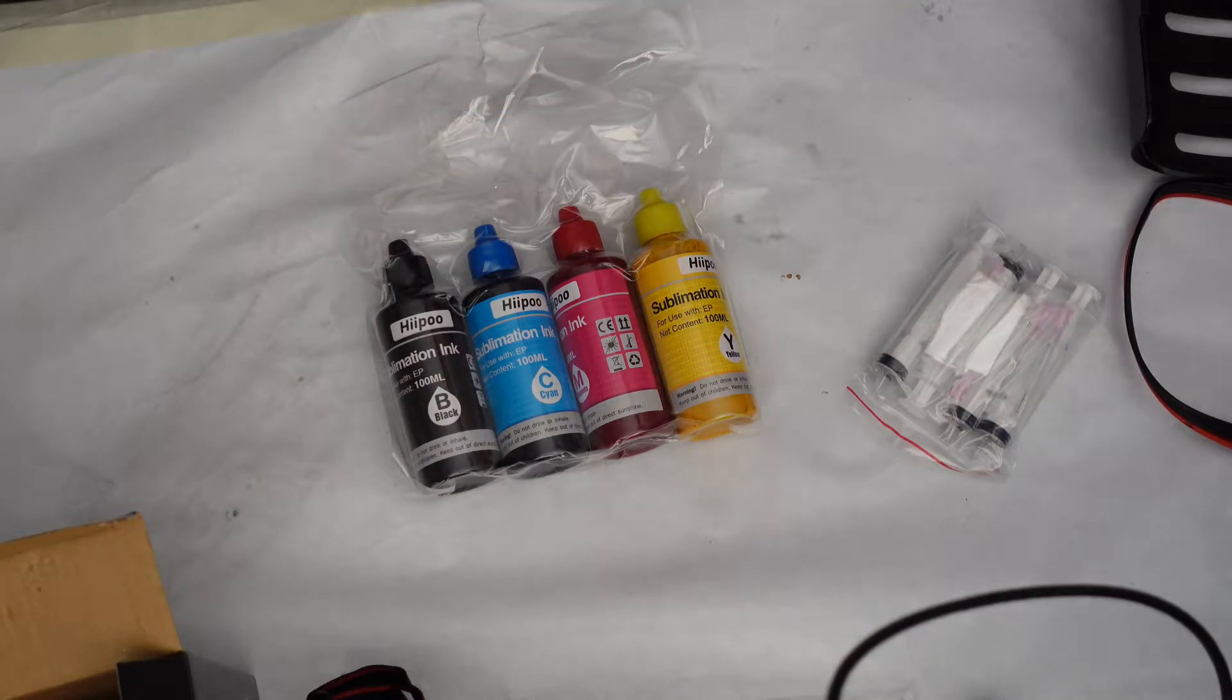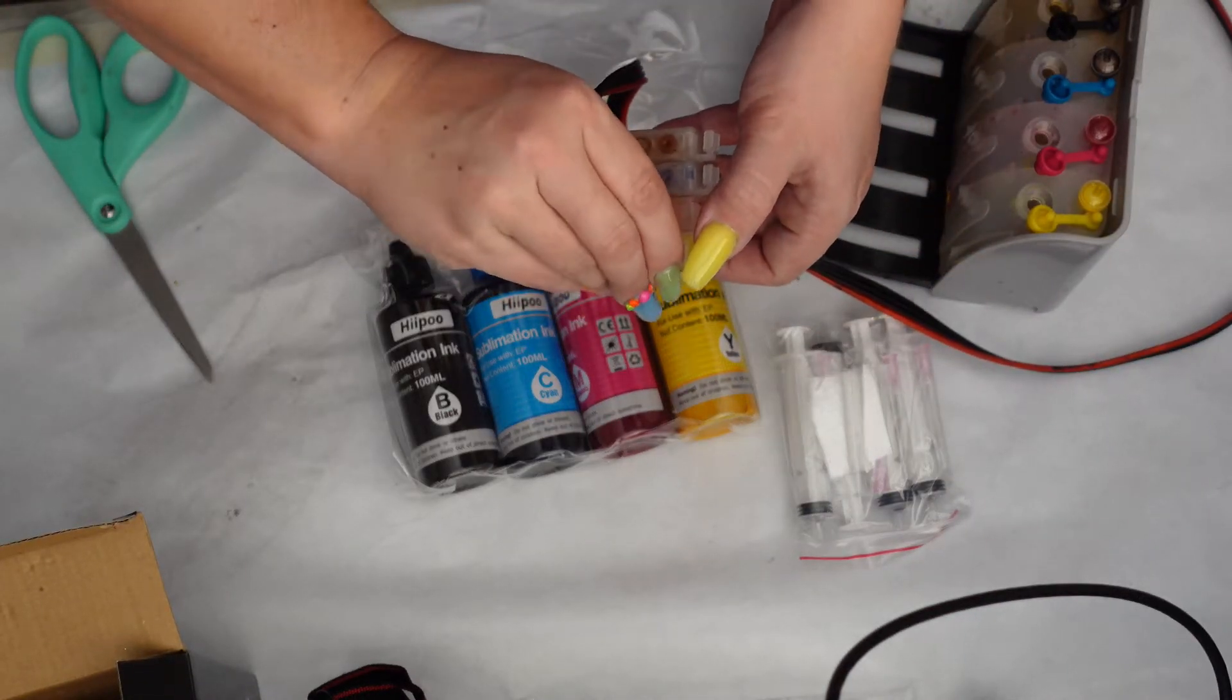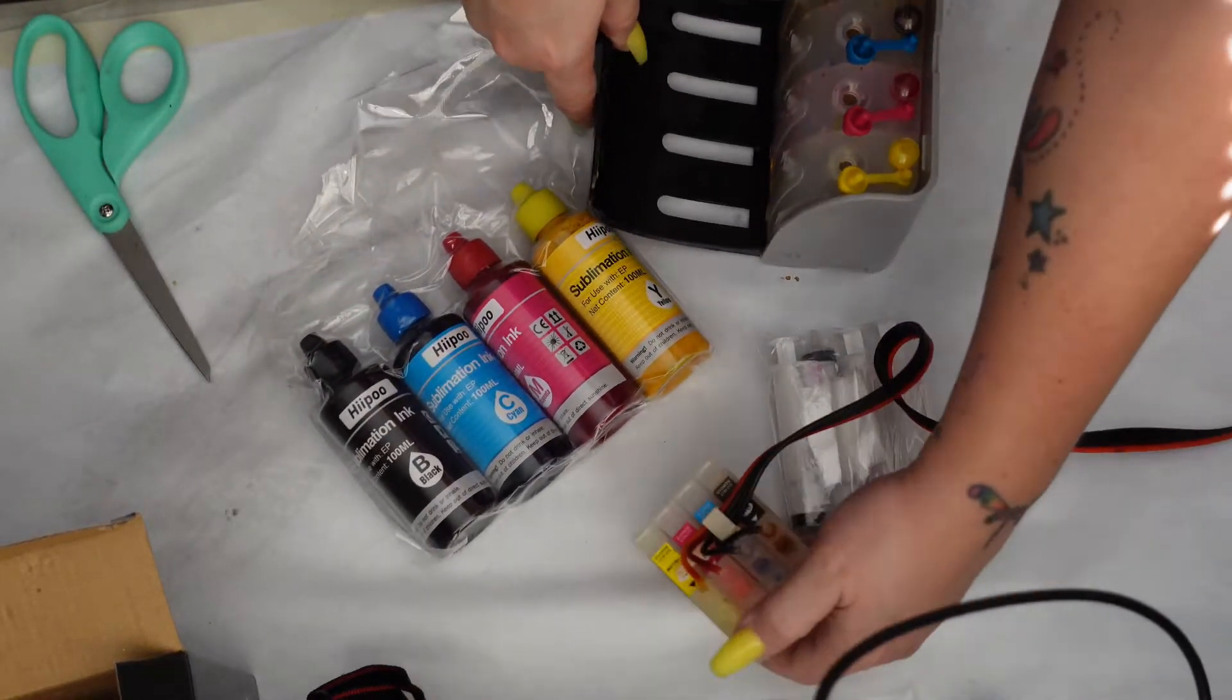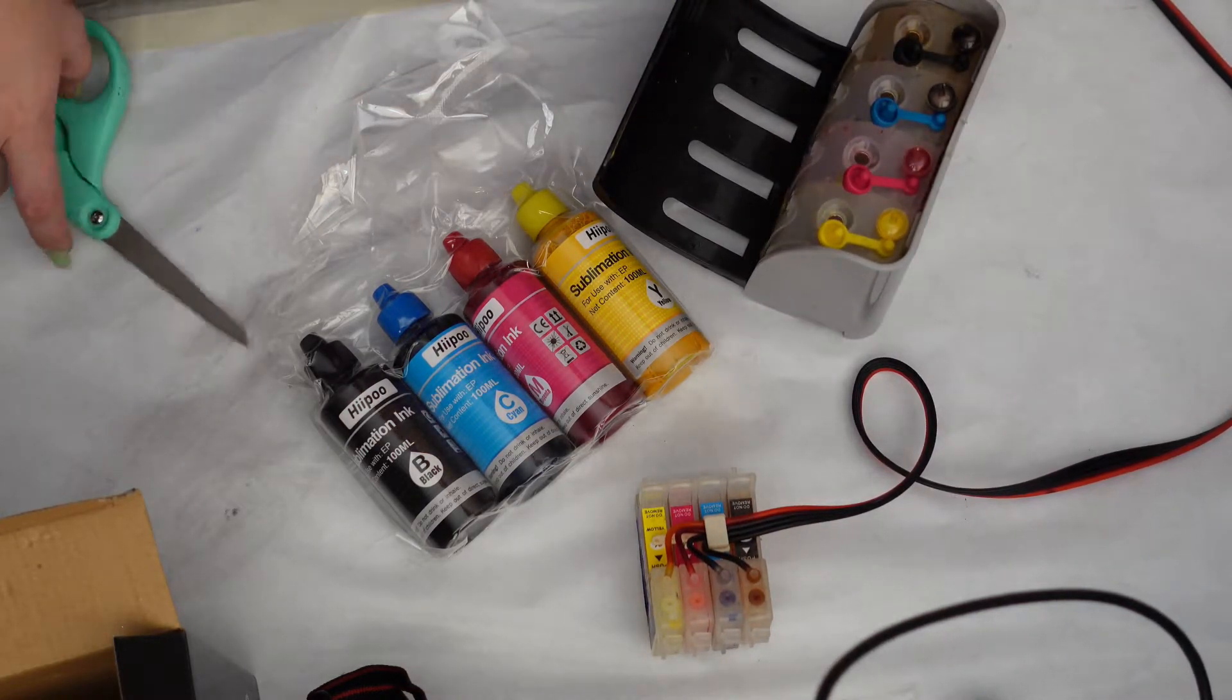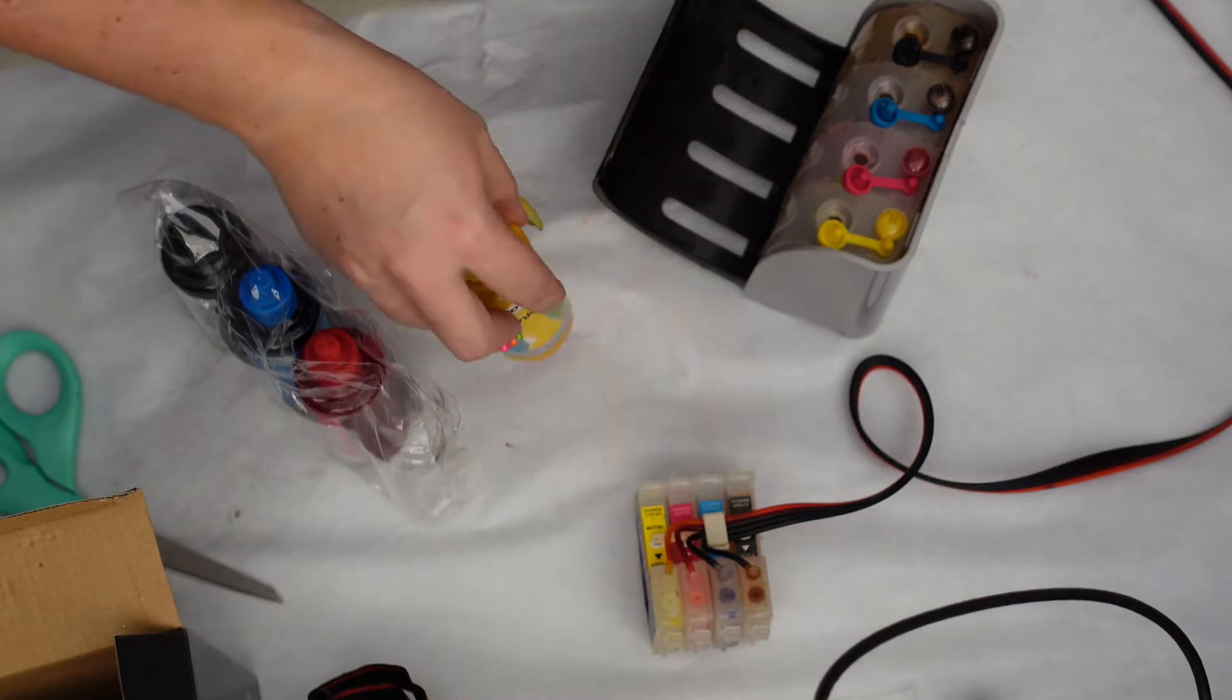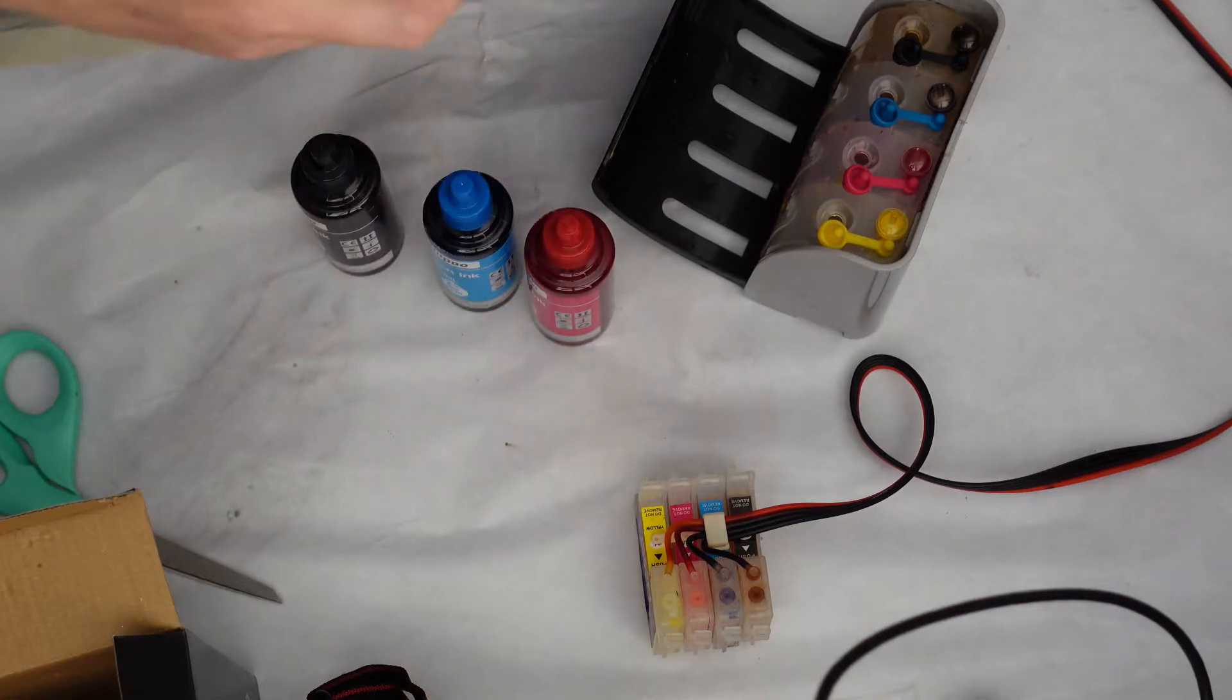So the first thing we're going to do is we're going to cut open this ink. Now, you can use these needles, but today we are going to be filling up a CISS. So if you're going to be filling up just ink cartridges, you'd put the needles on and take out the plunger like that. And then you would fill it up with the ink. Now, this is a recently cleaned ink cartridge or a CISS. And if you need to know how to clean out your CISS, I will be putting up a video here pretty soon on how to do that. So let's go ahead and cut this open. Now, this looks very pigmented. So that's a good thing.